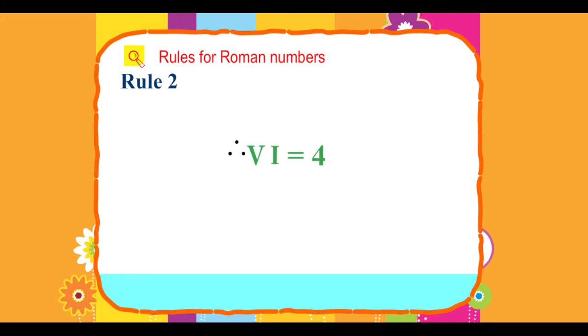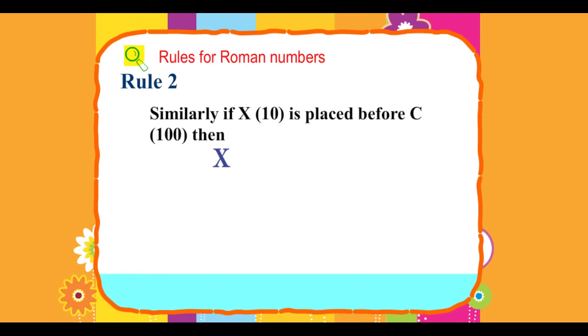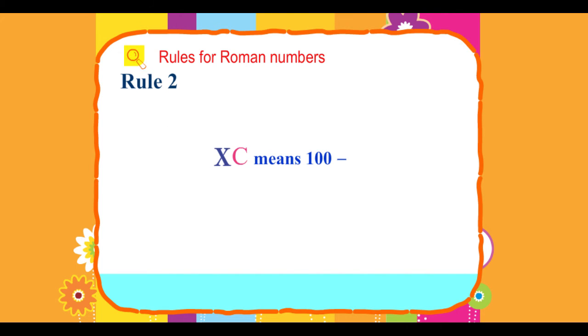Similarly, if X (10) is placed before C (100), then XC means 100 minus 10 equals 90. XC equals 90.